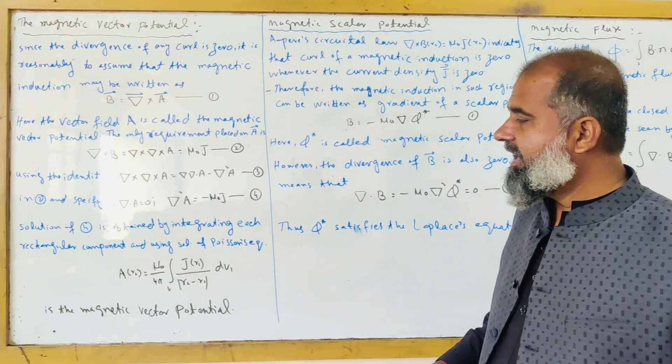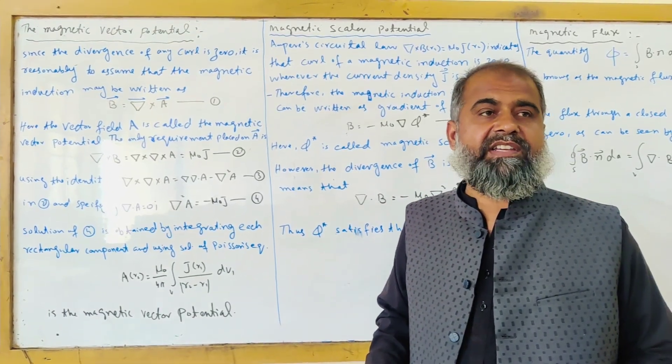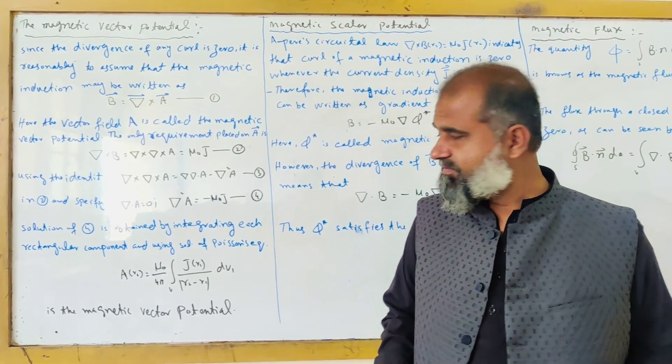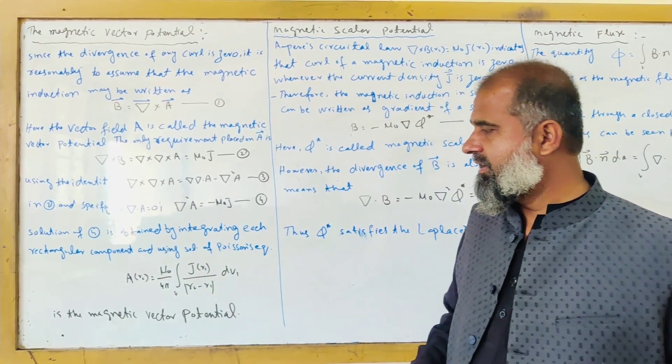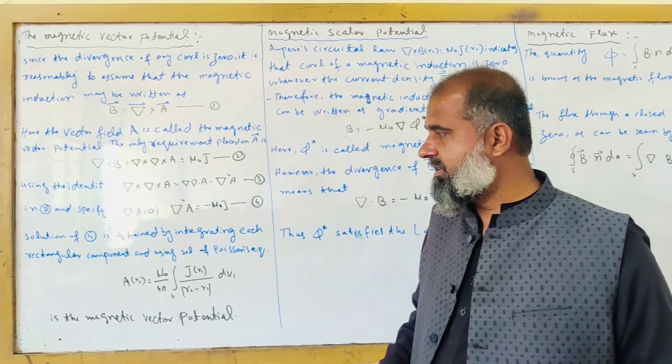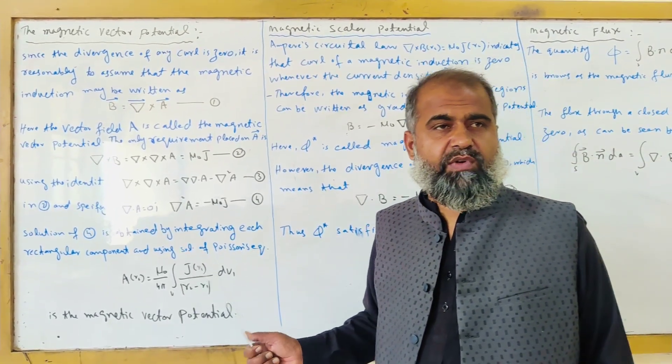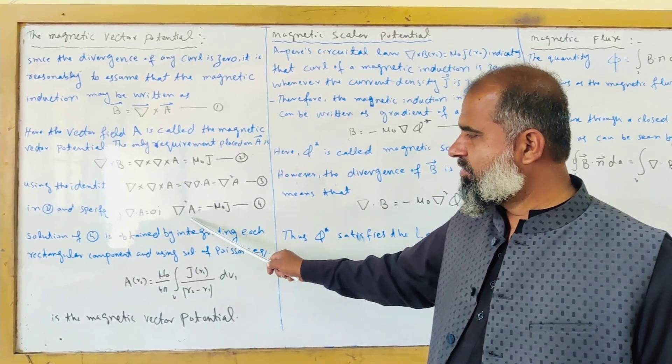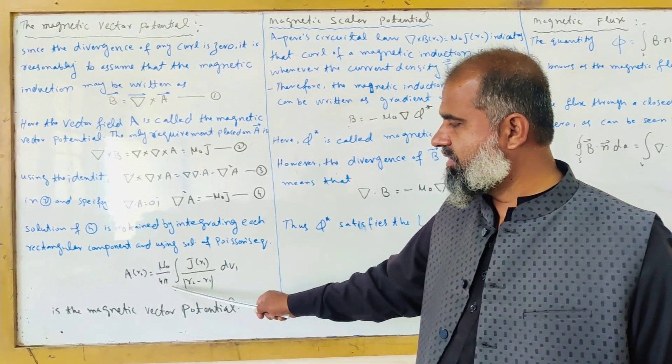This is equation 4. The solution of this equation can be obtained by integrating it into its components. You can integrate each of its components and use the solution of the Poisson equation. There is simple mathematics involved. Similarly, you can get the solution of equation 4.